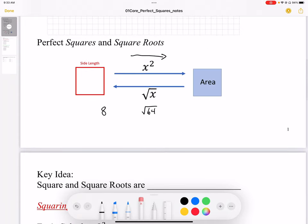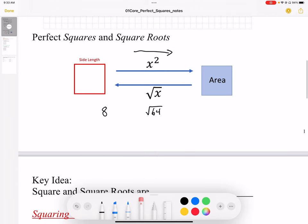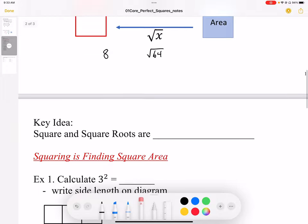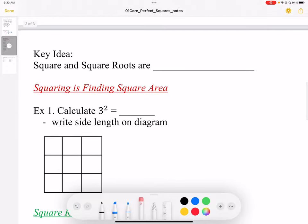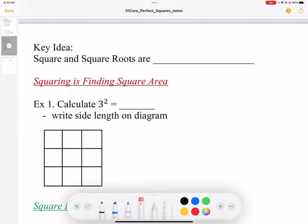Perfect squares and perfect square roots work out nicely. We square root area to get side length, we square the side length to get area, and they are opposite operations of each other. So the key idea is squares and square roots are opposites—they undo each other, they do the opposite thing.